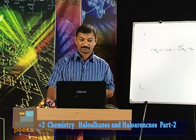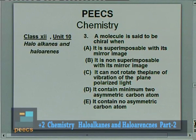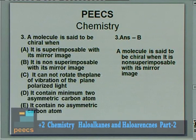Question 3: A molecule is said to be chiral when — options are: it is superimposable with its mirror image; non-superimposable with its mirror image; it cannot rotate the plane of vibration of plane polarized light; it contains a minimum of two asymmetric carbon atoms; it contains no asymmetric carbon atom. The answer is B — a molecule is said to be chiral when it is non-superimposable with its mirror image.